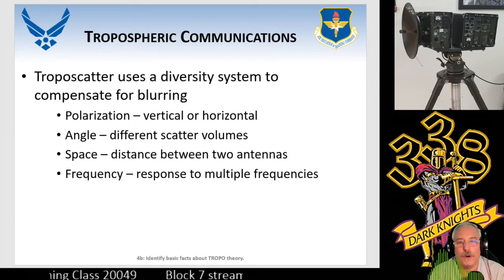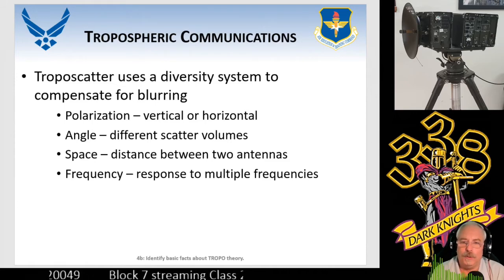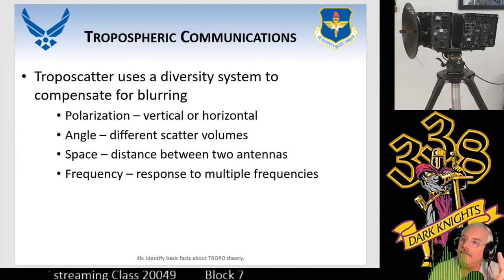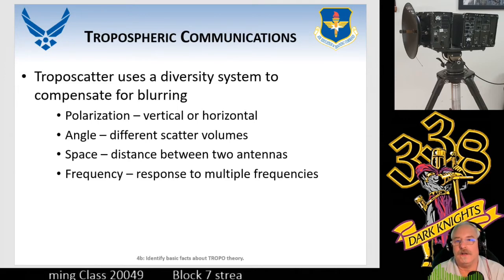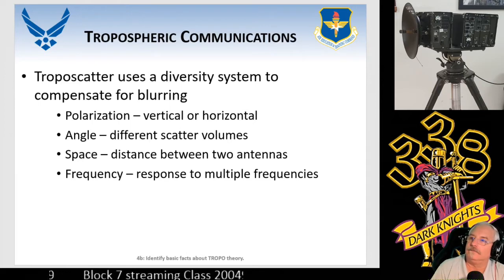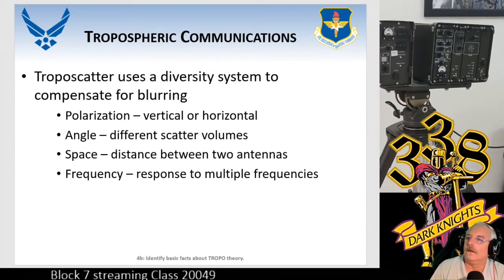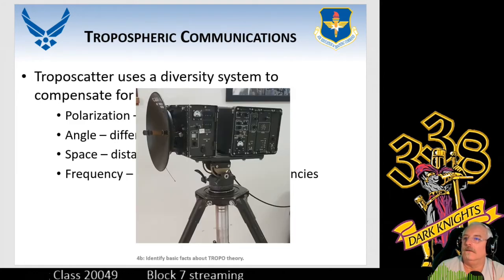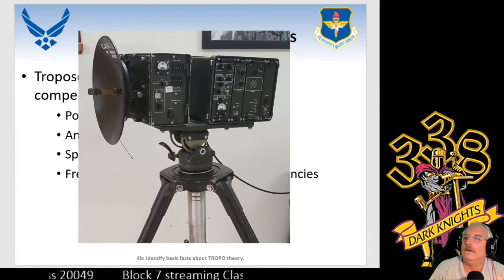For half duplex, you've got to be on whatever polarization the distant end is using — mobile radios would both be vertical or both horizontal. When you go into your labs, look above — you'll see a very small one-foot dish with a small waveguide on it. That's attached to something called an RF assembly, which has an antenna in it. Think back to block four — what was the polarization of the NIVIS, near vertical incident sky wave?